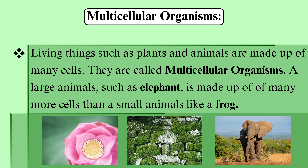Living things such as plants and animals are made up of many cells. They are called multicellular organisms.